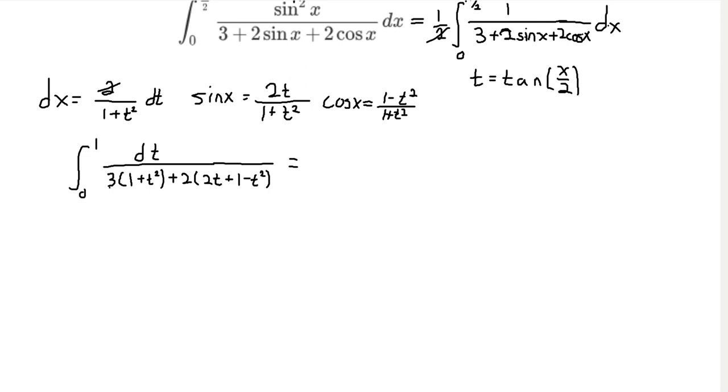And so now, this looks kind of bad, but after simplifying, what we get is dt/(t² + 4t + 5). And this might not be obvious to most of you, but we can let 5 equal to 4 plus 1, and then here we have a squared binomial. This is (t + 2)², and so we can use that to our advantage.